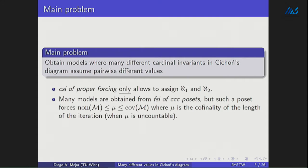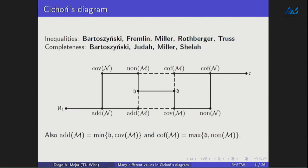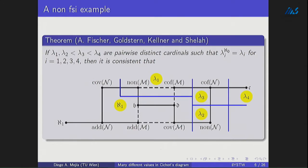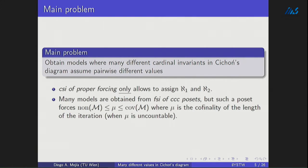One of the easy techniques we have is finite support iteration of CCC forcings. But the main problem is that in finite support iterations, we always add Cohen reals at limit stages. Then, depending on the length of the iteration — if the length is μ, which is uncountable — the uniformity of meager will always be smaller than the covering of meager. So everything on the left side will be smaller than everything on the right side. If you want to avoid this, you need other new techniques. I'm going to talk here only about finite support iteration techniques.